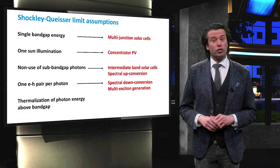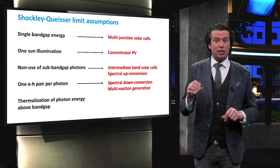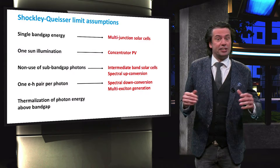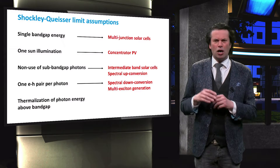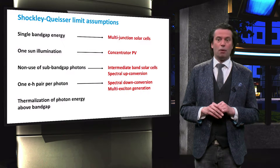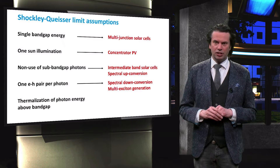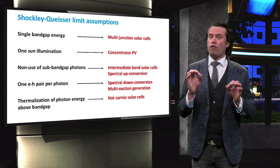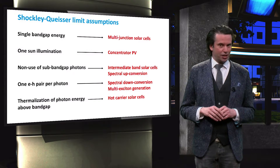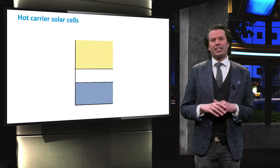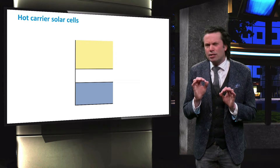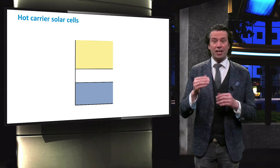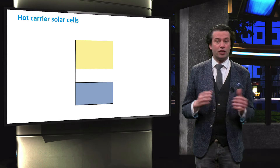The final assumption we will discuss is that any photon energy above the bandgap is lost due to thermal relaxation. Even if more than one electron-hole pair is generated by a single high energy photon, most photons will not have an exact multiple of the bandgap energy, and therefore thermal relaxation will still occur. Hot carrier solar cells focus on reducing the thermalization energy loss, by collecting high energy electron-hole pairs just after light excitation and before they have the chance to relax back to the edges of the electronic bands.